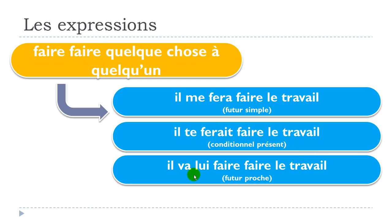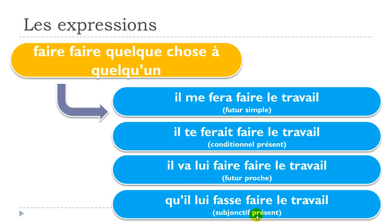For the near future with the third person singular masculine: 'il va lui faire faire le travail.' And for the subjonctif présent with the third person singular feminine — the pronoun is the same — we get: 'qu'il lui fasse faire le travail.'